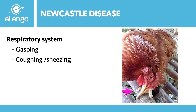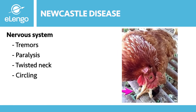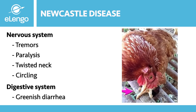When the nervous system is affected, we will observe paralysis and the twisted neck. We will also see tremors and the birds will be cycling as well. When the digestive system is affected, we will observe diarrhea that is greenish in colour. Other signs include a drop in egg production and abnormal eggs in colour, shape, and surface.